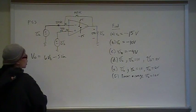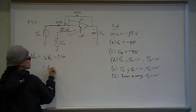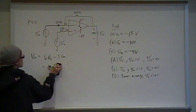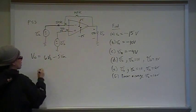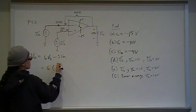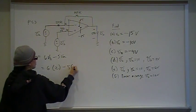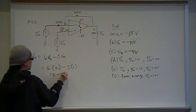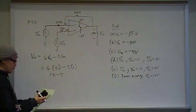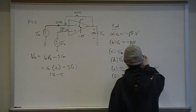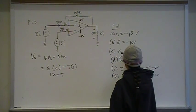And part D is 6 times B which is 2, minus 5 times 1, so that's 12 minus 5, which is 7 volts.